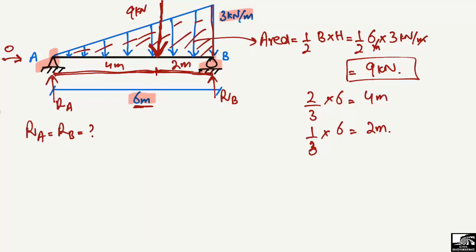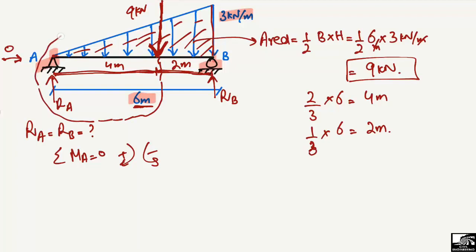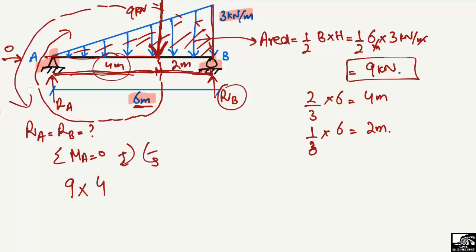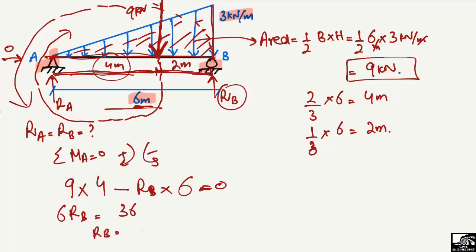Now taking the summation of moments about point A equal to zero, with clockwise positive and anti-clockwise negative. The 9 kilonewton load acts downward at 4 meters from A, creating a clockwise moment: positive 9 times 4. RB acts upward, creating an anti-clockwise moment: negative RB times 6. Setting the sum to zero: 9 times 4 minus RB times 6 equals 0, so 6RB equals 36, giving RB equals 6 kilonewton.